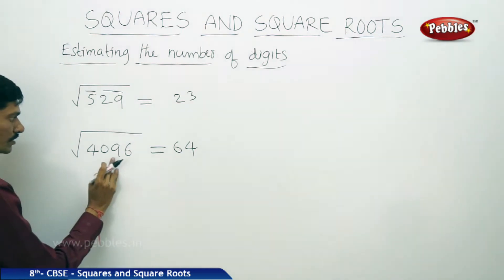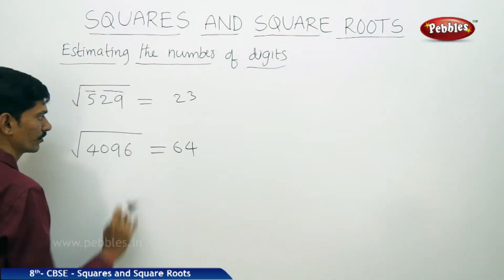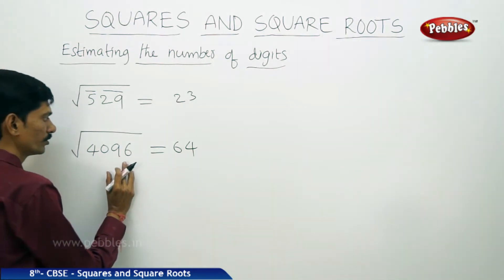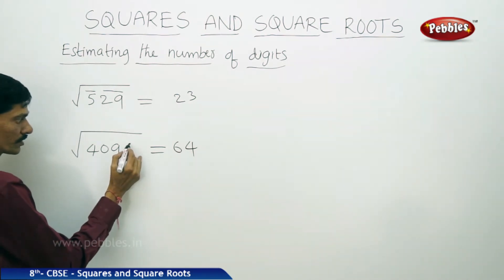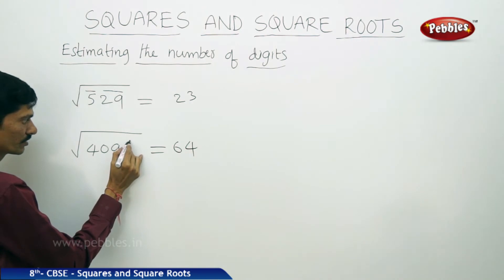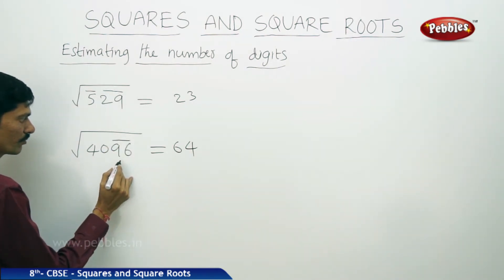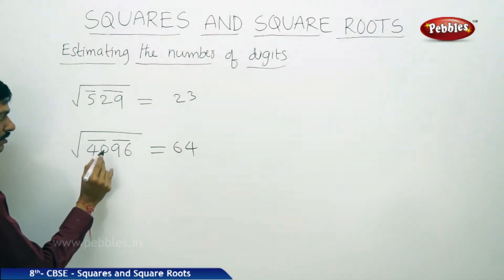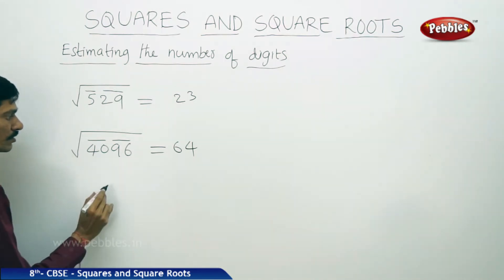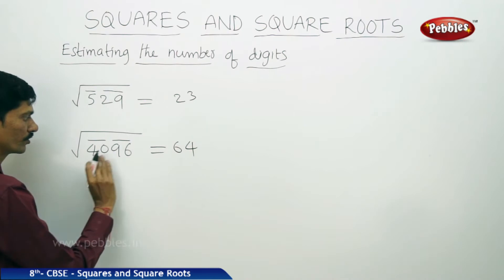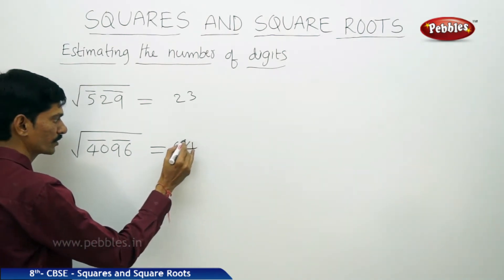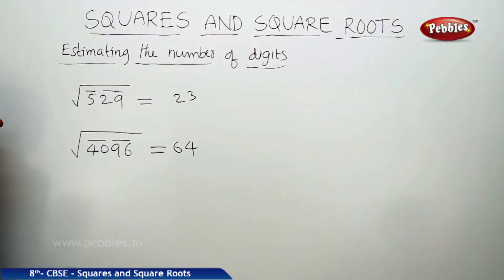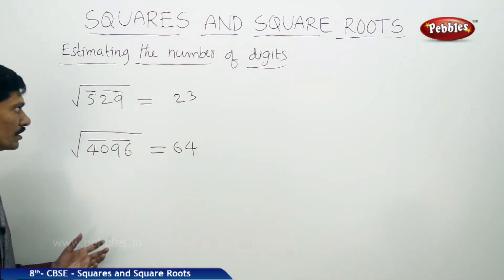For 4096, the square root is 64. While doing the division method, how many bars will be used? We use the bar from unit's place: over 96 is one bar, and over 04 is another bar. So there will be 2 bars above 4096, and therefore 2 digits in the square root of 4096. Even though the square root of 4096 is 64, there will be 2 digits. By looking at the given number, we can find how many digits are in the square root.